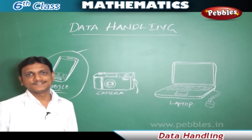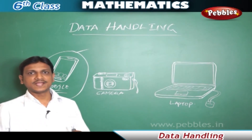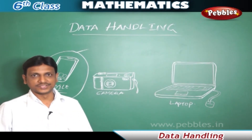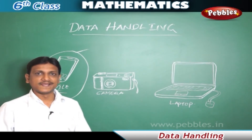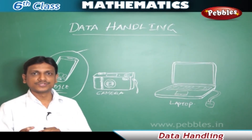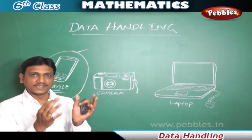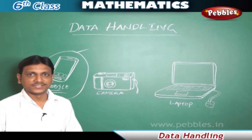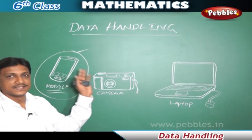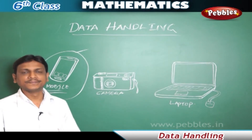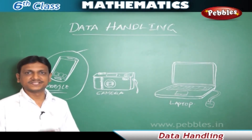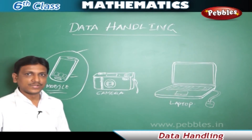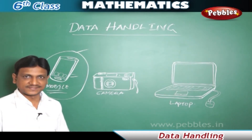We have to collect the information, organize it, and then come to a good decision — identifying which brand is best at a suitable price. This organization of information is called data handling. Data handling helps us in taking the right decision; when we organize all information about a mobile phone, we can easily find out which brand is the best.